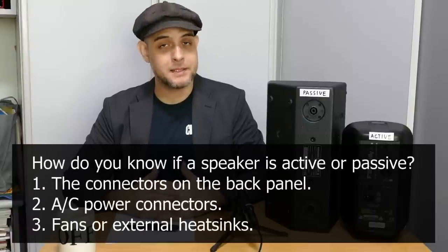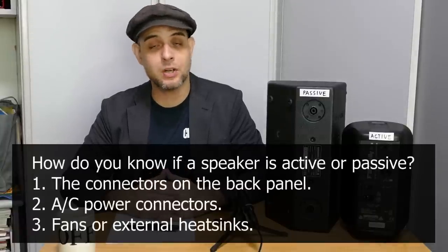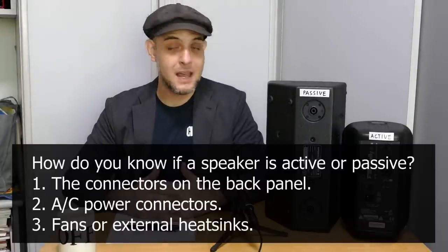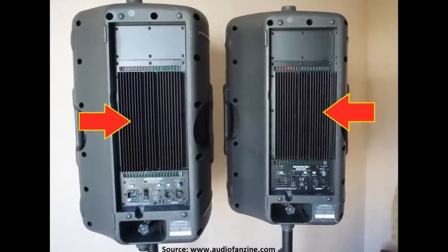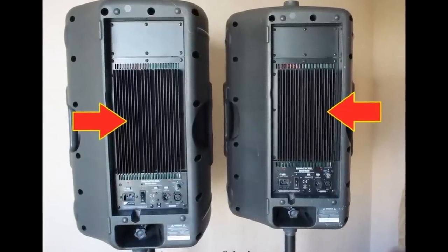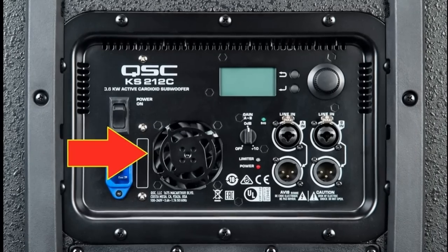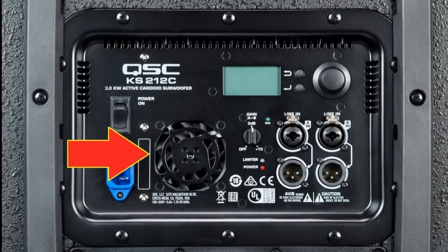Finally, passive loudspeakers can be spotted because they do not have fans or external heatsinks. In the case of active speaker cabinets, the internal power amplifiers have to be cooled. Sometimes this is done passively using an external heatsink, which will be seen as a finned aluminium extrusion on the back of the cabinet, and sometimes they will actually have fans that blow air through the back of the loudspeaker enclosure over the heatsinks, which are located internally. So if you see a cooling fan, it's an active loudspeaker.